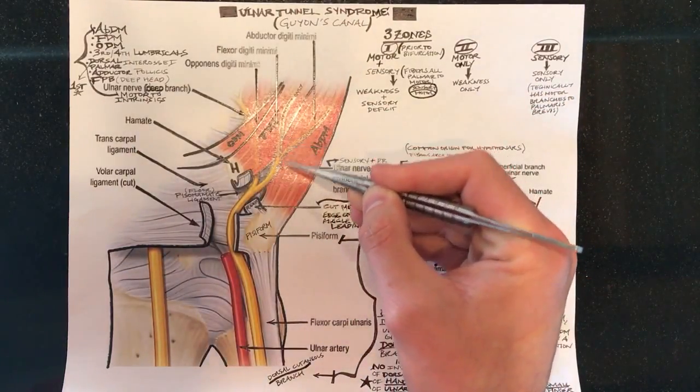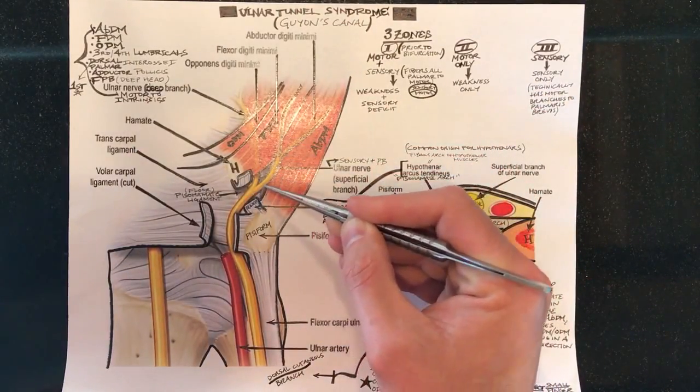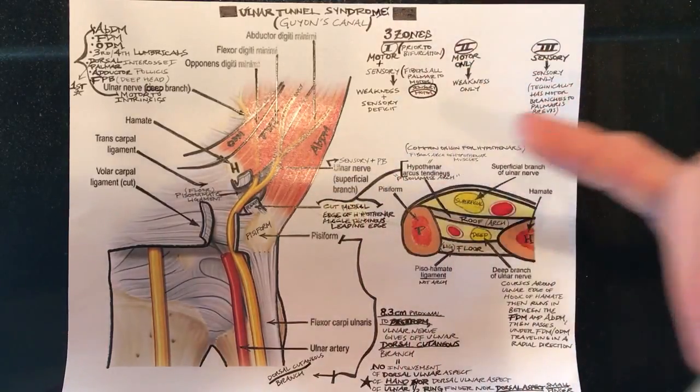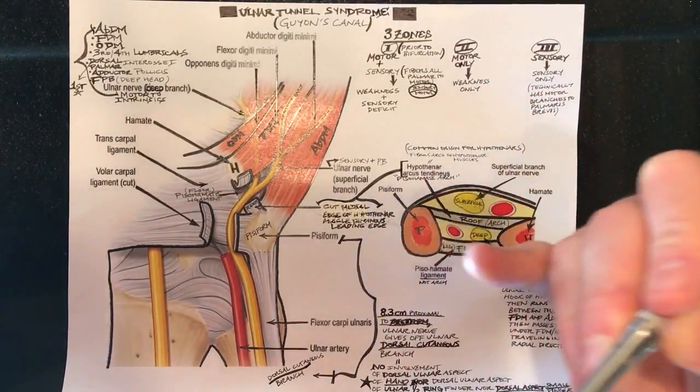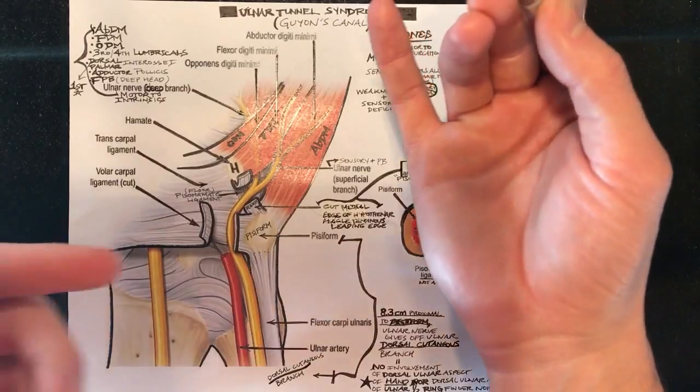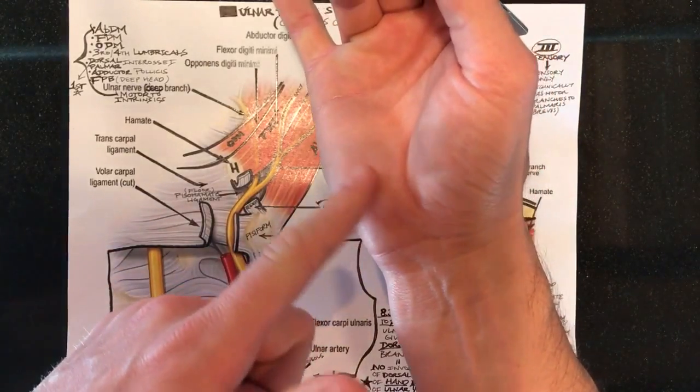So what about the superficial branch? The superficial branch has been referred to as a purely sensory nerve but technically it gives off a branch to the palmaris brevis muscle which just serves to wrinkle the skin of the hand here.